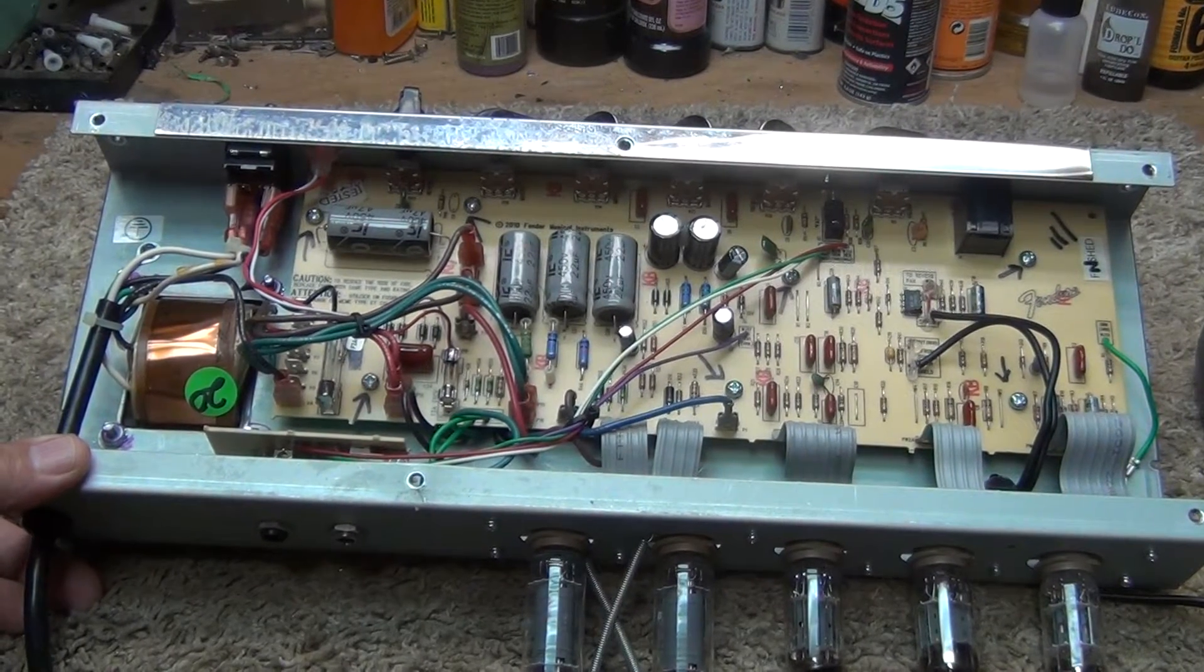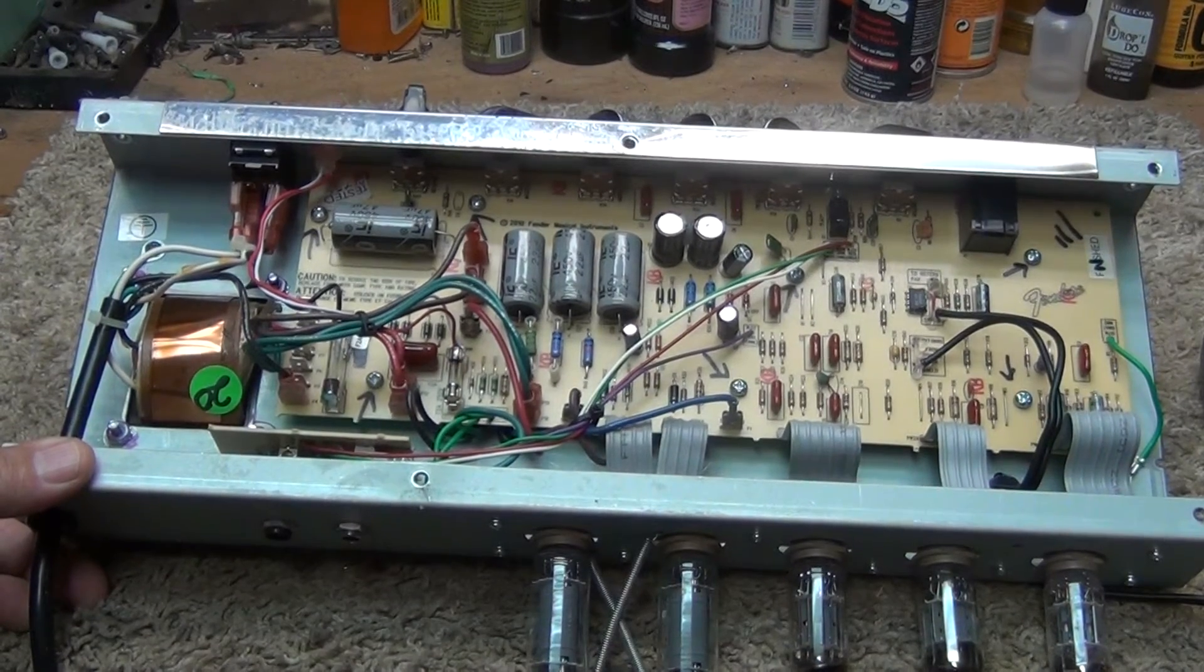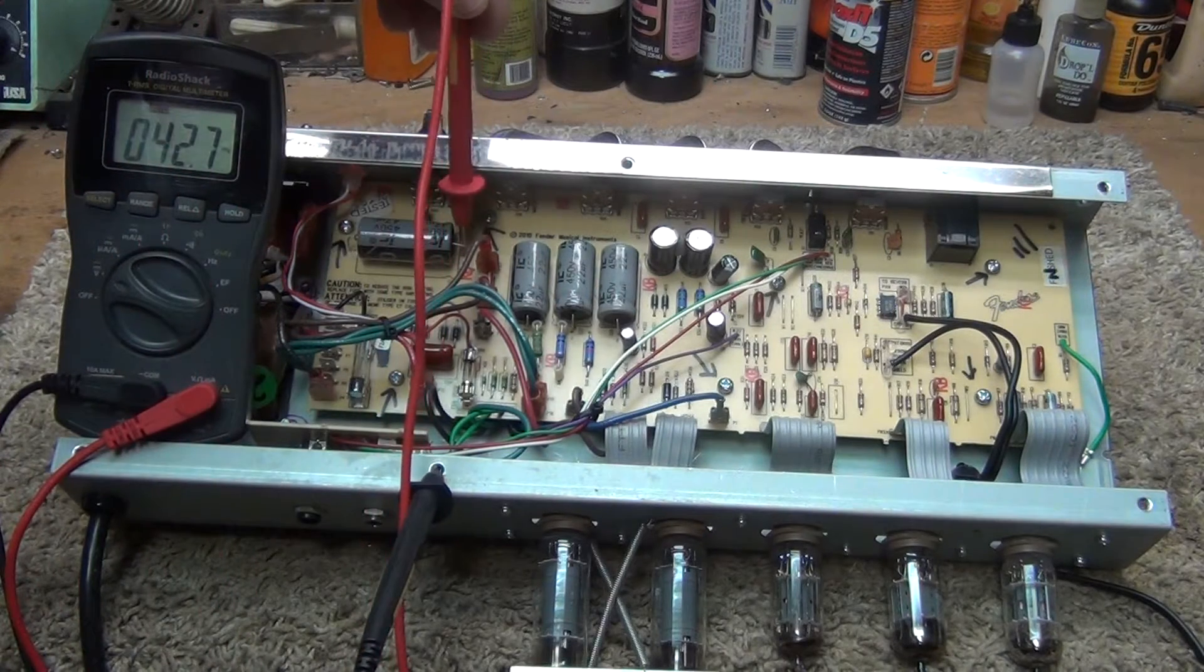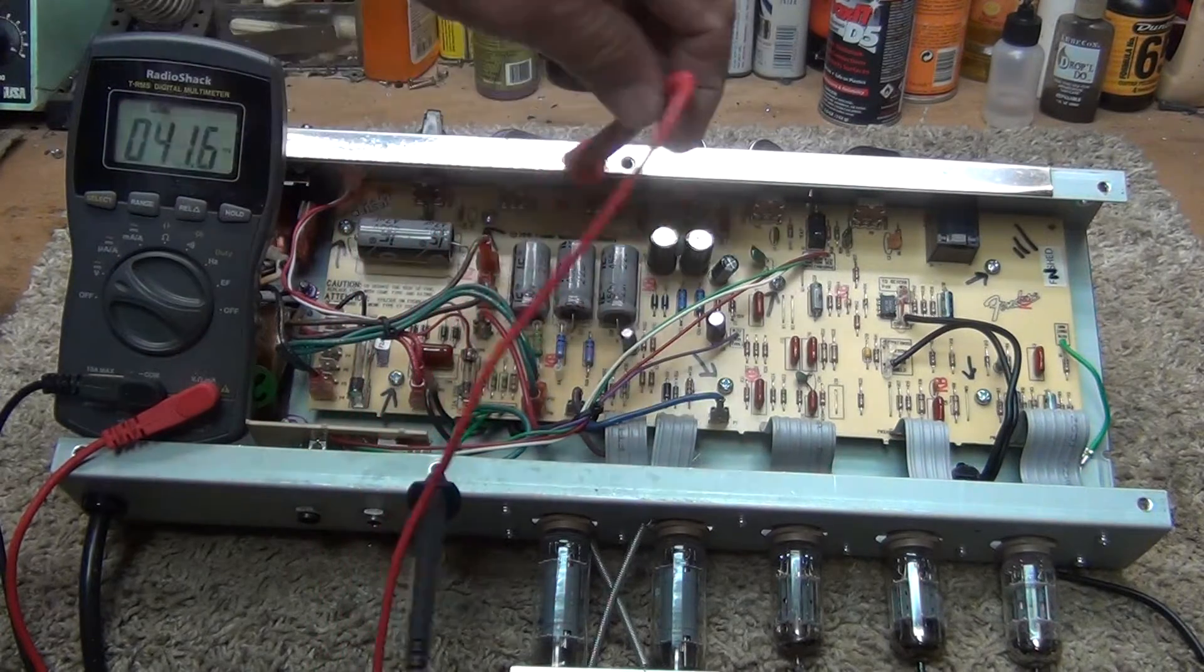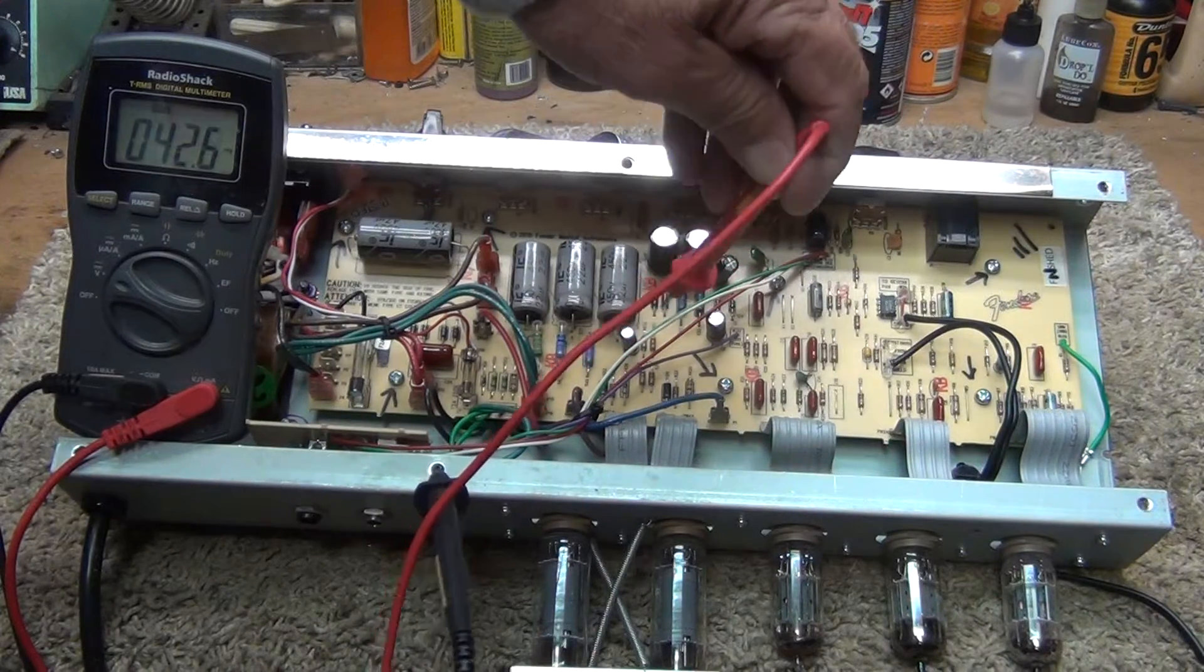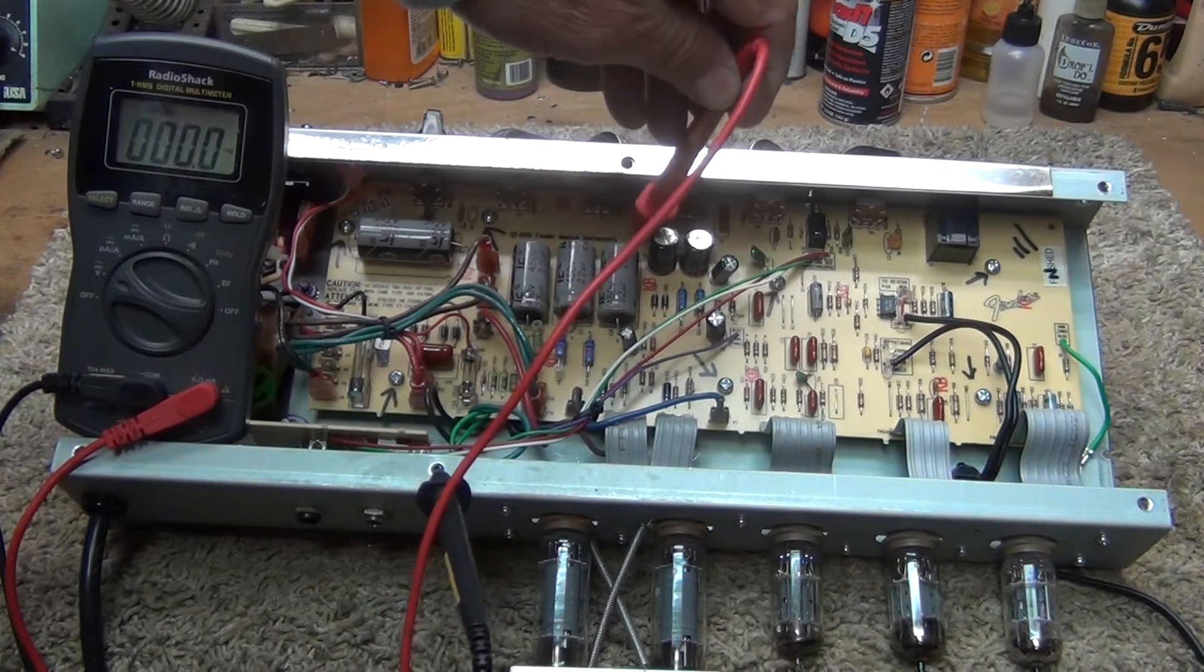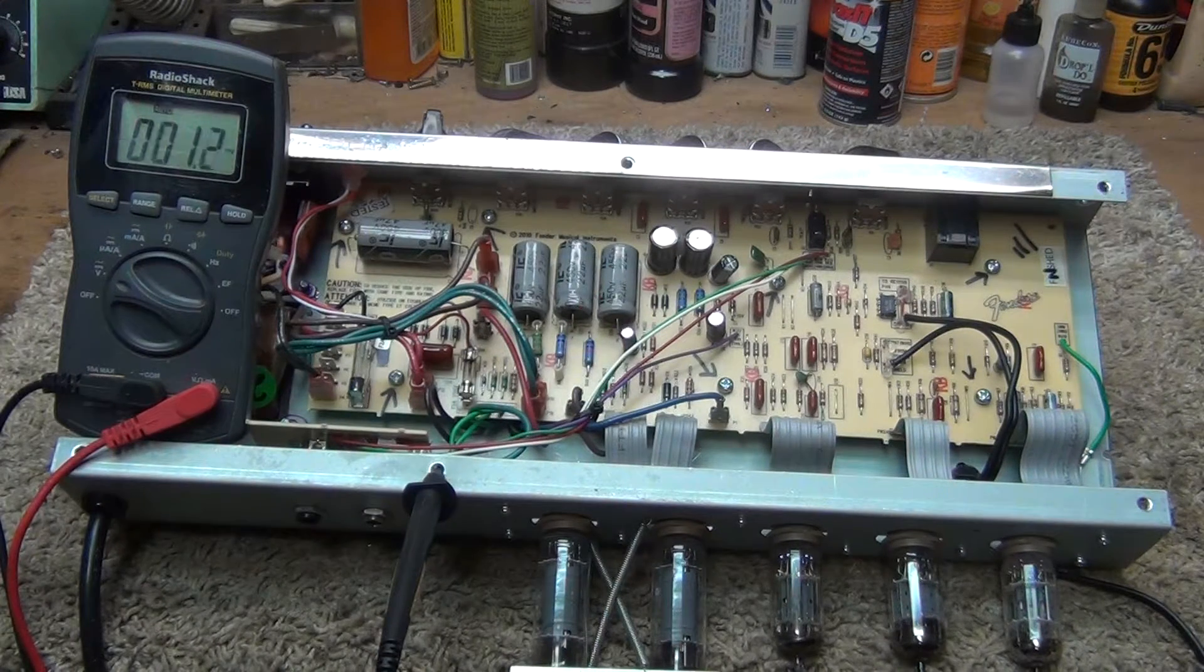So the first step, get that chassis out of the cabinet, pretty simple. Second step, very important step. Check the plus side of these capacitors and make sure they are not holding any voltage. I think you'll see on the meter face, these are at 42 millivolts. So there's no electricity stored in these caps, which assures us of not getting electrocuted.